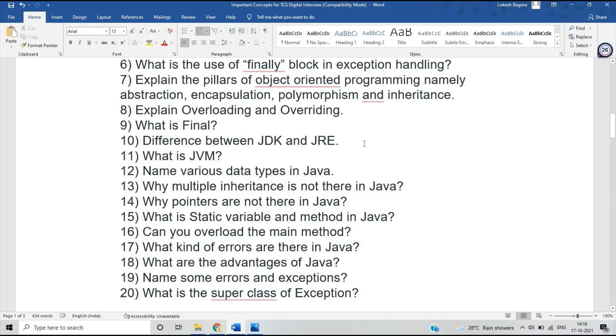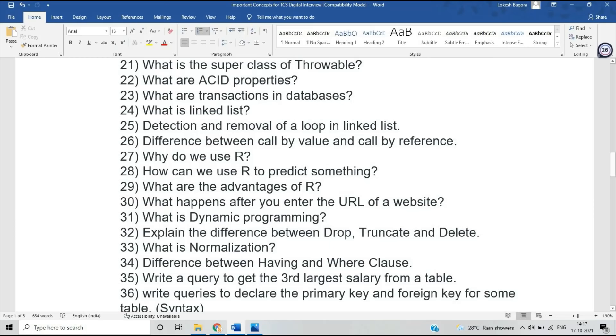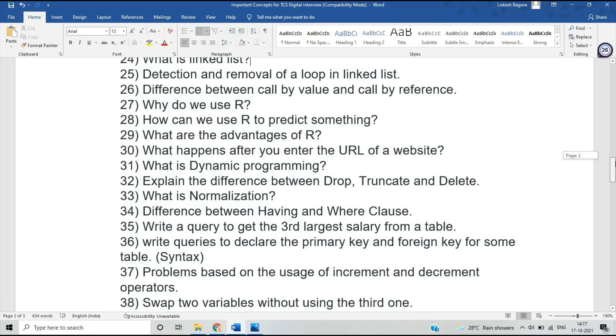The candidate mentioned Java in his skill set, so if you mention Python or other skills in your resume, there are direct questions from that. Difference between JDK and JRE, what kind of errors are there in Java, what is the superclass of exception? This type of questions are asked. What are ACID properties? What are transactions in databases? Mixed up questions are asked in the digital interview because they will check your whole technical knowledge as well as some subjects. Detection and removal of a loop in a linked list—these are some questions they ask.